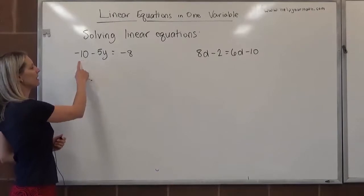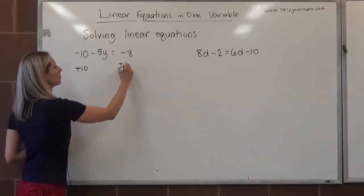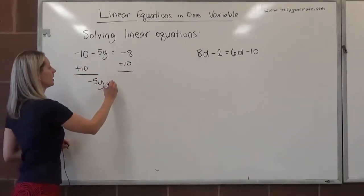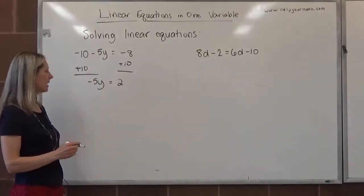First, I have a negative 10 on this side. To undo the negative 10, I will add 10 to both sides. Negative 5y, these cancel out, equals 2. Then to get y by itself, we'll divide both sides by negative 5.